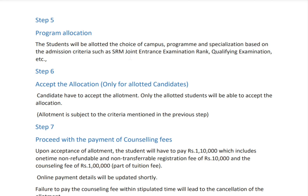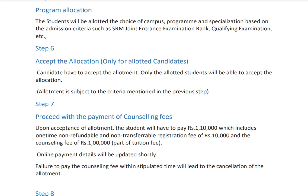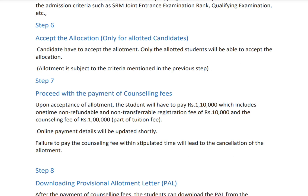You should accept the allocation if you want. Step seven is paying the allotment fee of one lakh ten thousand, which includes a one-time non-refundable and non-transferable registration fee of ten thousand rupees. If you pay one lakh ten thousand and want to withdraw your seat, only one lakh will be refunded — the ten thousand is kept by them.